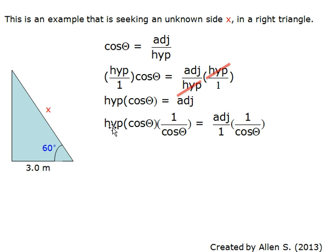Similar to what we did, we get this equation. And then cancel out the cosine of theta shown on the left. We get the hypotenuse equals the adjacent side divided by the cosine of theta.